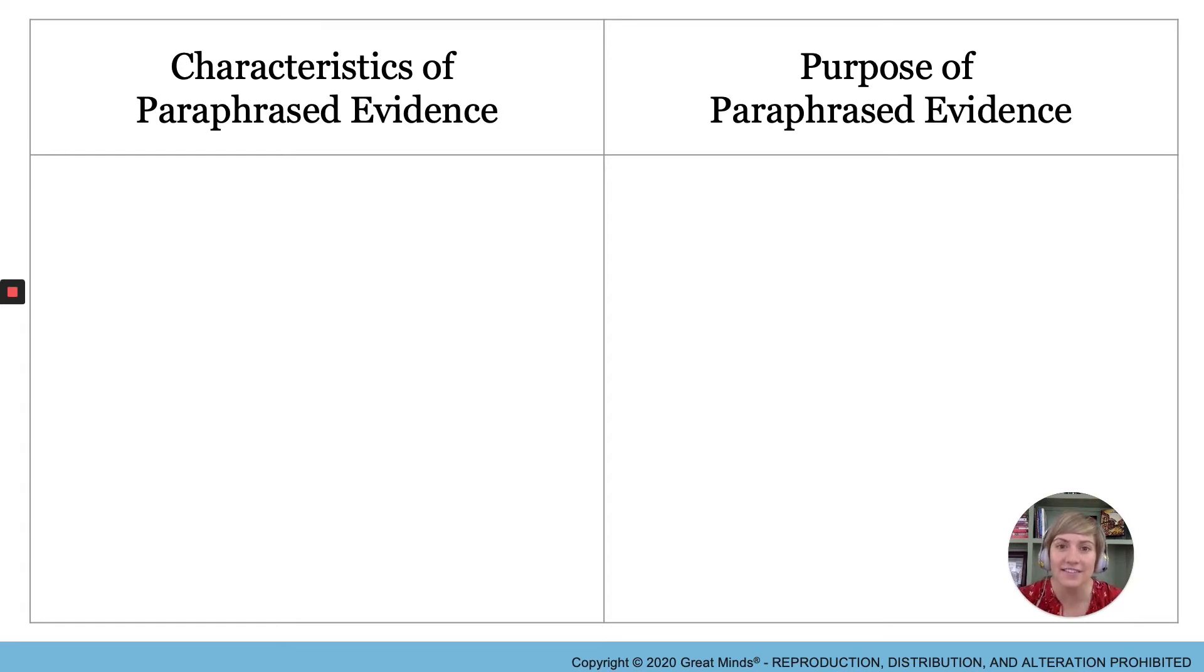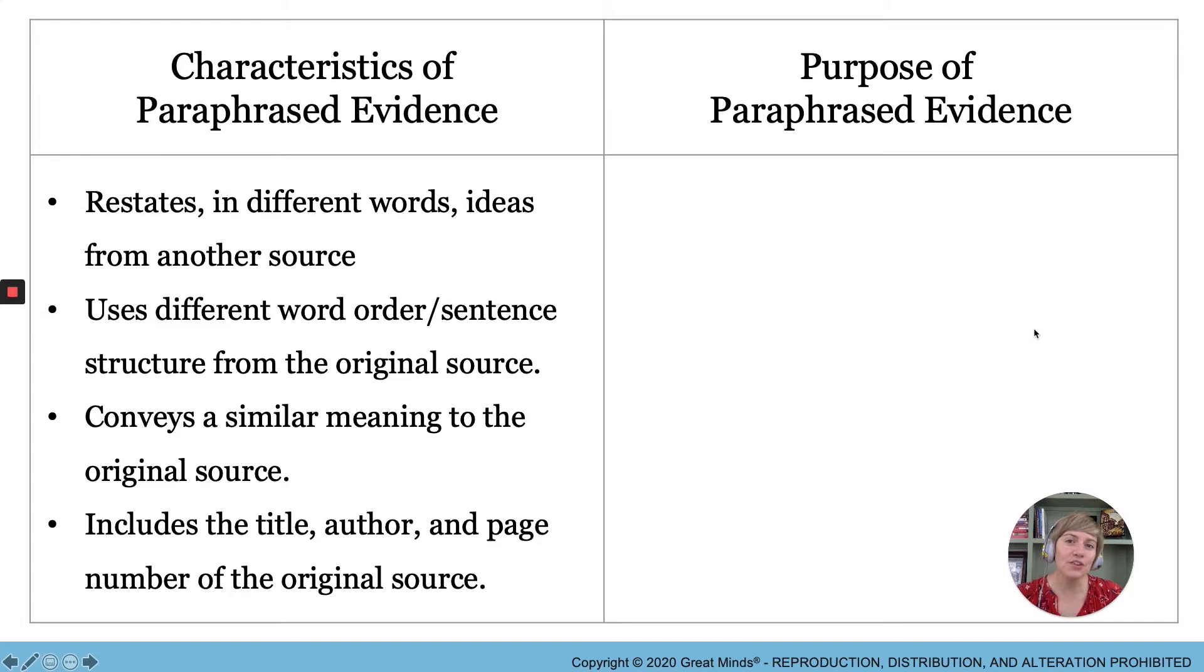All right, you got your chart. So let's stamp the characteristics of paraphrased evidence. Thinking back to what you already know in the example we just looked at in We Are the Ship. What are the characteristics of paraphrased evidence? Think. Here are some characteristics. You can jot these down as I talk about them. The first characteristic is that it is restated in different words or ideas from another source. Just like we saw with that fourth endnote, it's restated. The next is that it uses different word order or sentence structure from the original source.